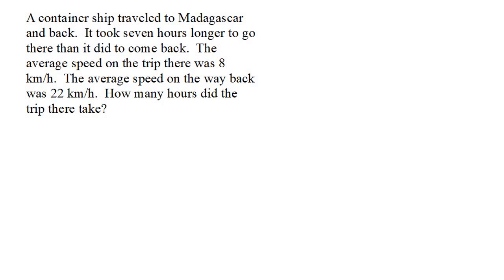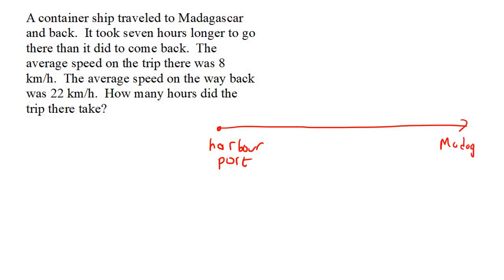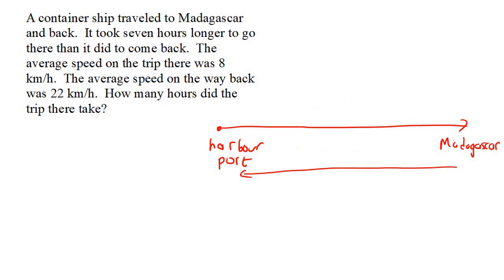So let's begin. Here we have the question: a container ship traveled to Madagascar and back. Let's say we are going from the harbor or the port — wherever the ship sails from — all the way to Madagascar, and then it's going to come all the way back. We can still say that the distance there and the distance back will always be the same. We know that — that's going to be the same.